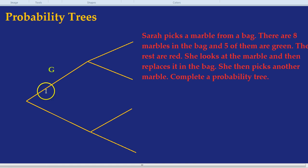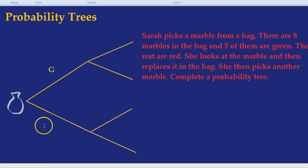That first branch represents her first choice. Let's imagine she picked a green marble. Let's draw the bag here. There's our bag full of marbles. That branch represents her picking a green marble. This branch represents her picking a red marble the first time.